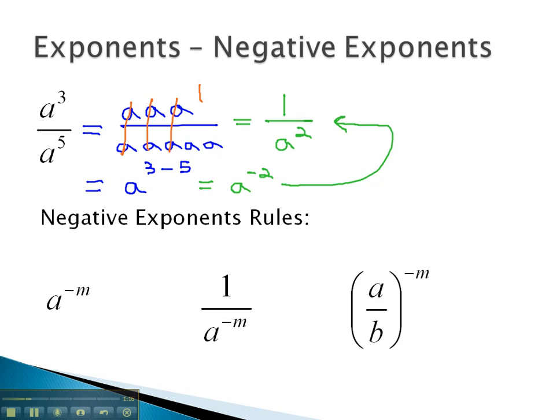This gives us our negative exponent rules. A negative exponent simply means we flip the base. In the first case, a to the negative m, moving to the denominator, and now the exponent is positive.